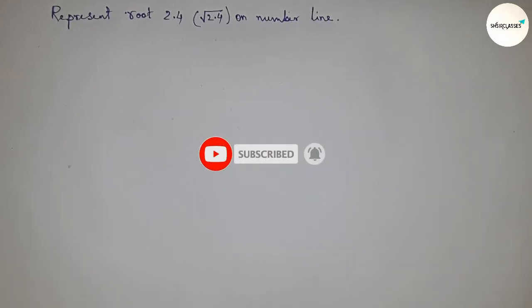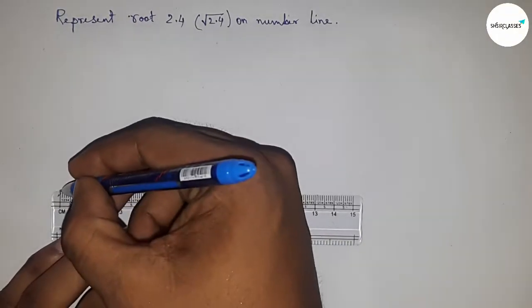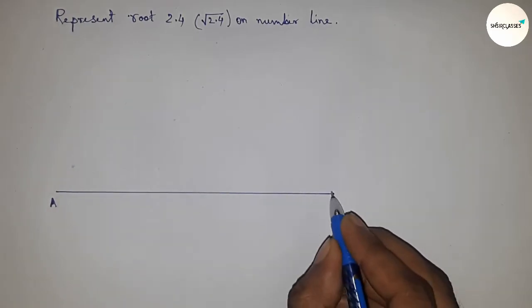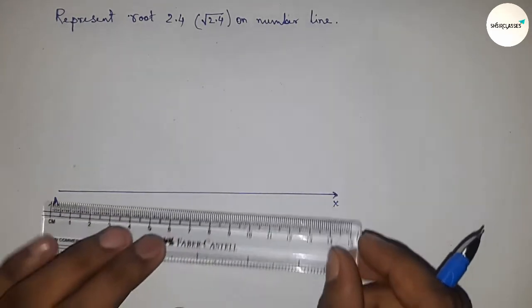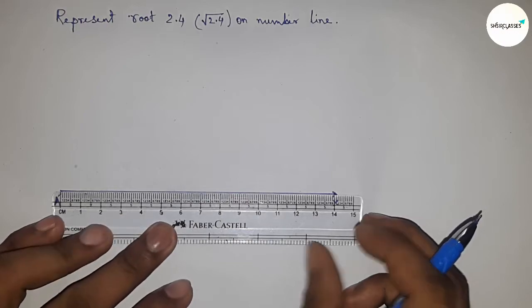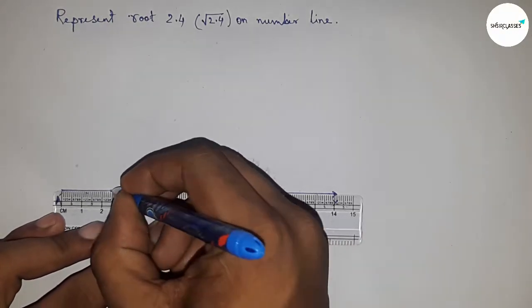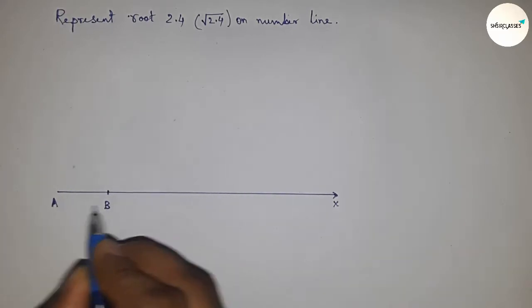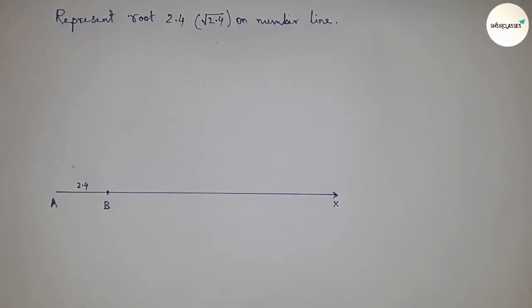First of all, draw a line of any length. This is the x-axis line. Next, take a distance of 2.4 centimeters and mark point B, so AB equals 2.4 centimeters.